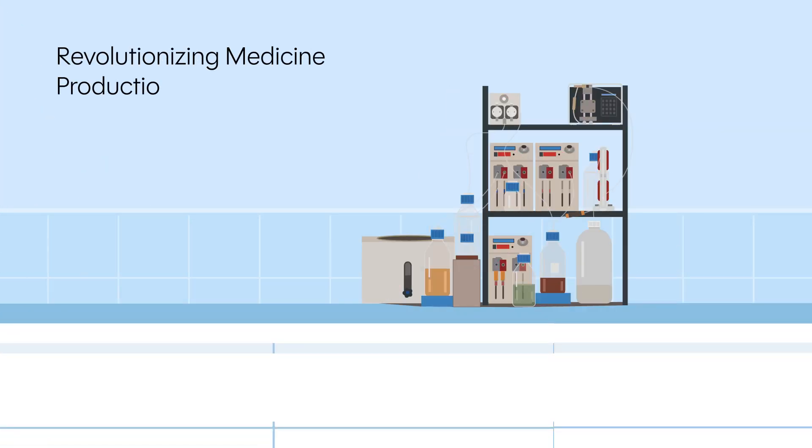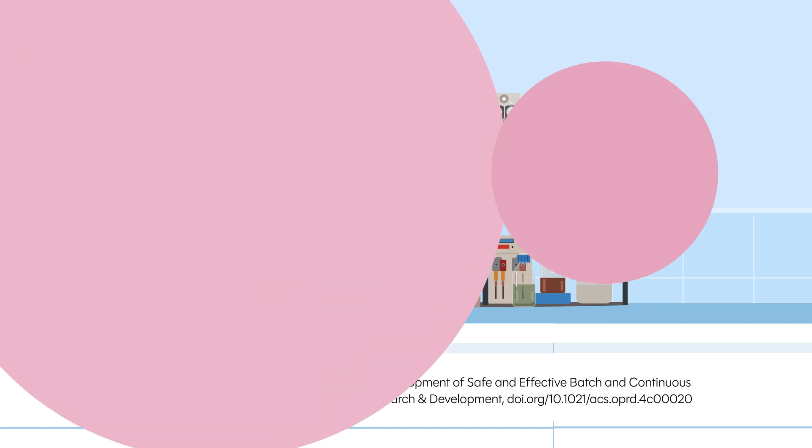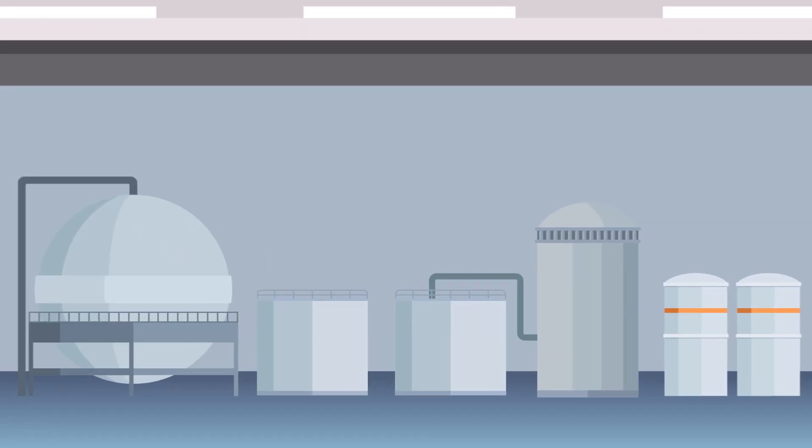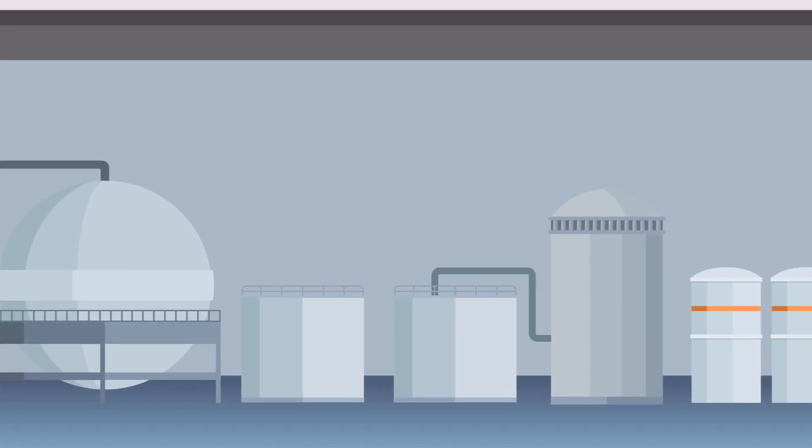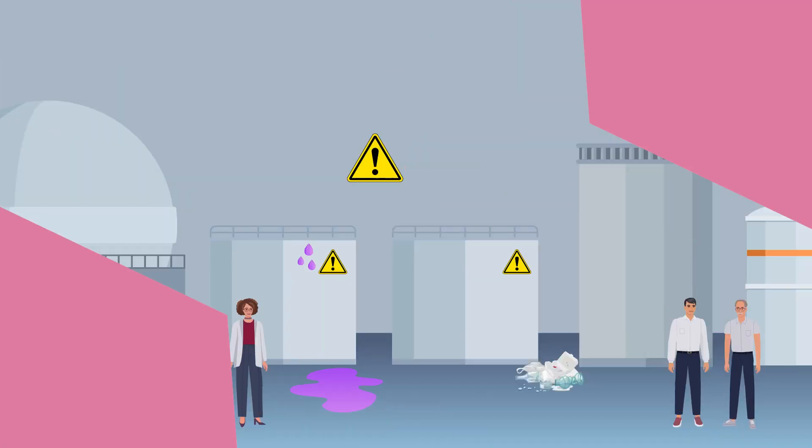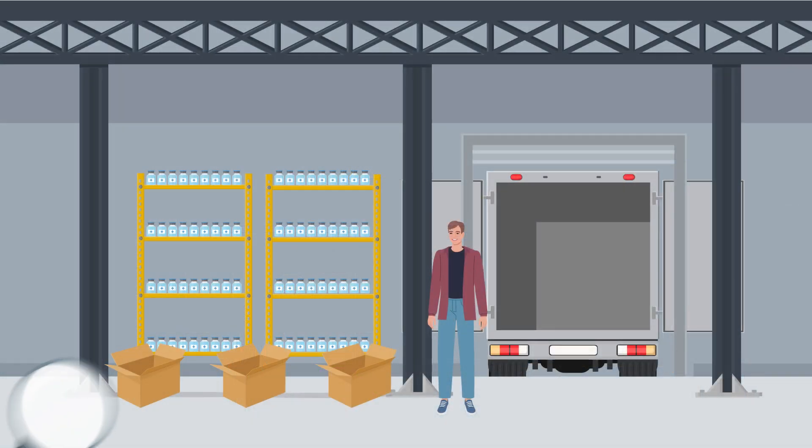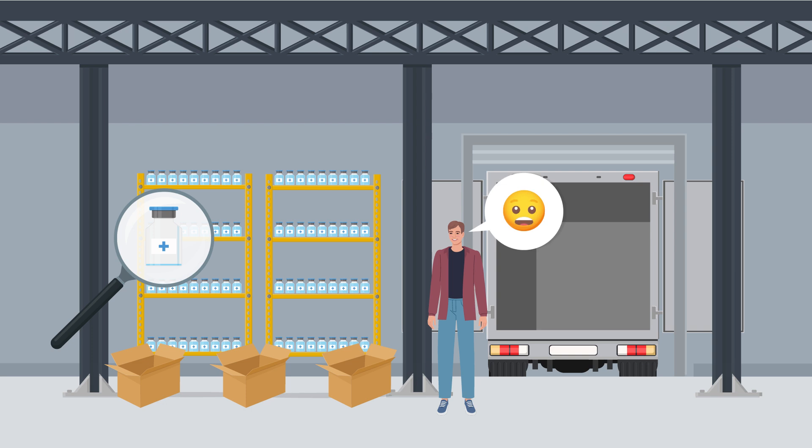Revolutionizing medicine production with continuous flow chemistry. Modern drugs depend on safe, efficient and sustainable chemical manufacturing processes. However, traditional batch synthesis methods often involve hazardous intermediates and complex steps, are vulnerable to global supply chain disruption, and pose risks to workers and the environment.